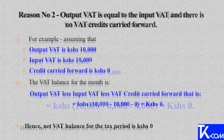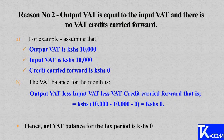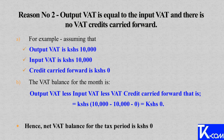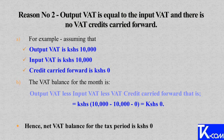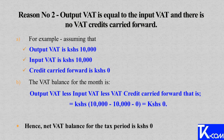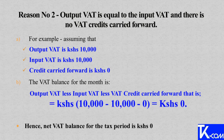Reason number two: output VAT is equal to the input VAT and there is no VAT carried forward. For example, if we assume that the output VAT is 10,000, input VAT is 10,000, and credit carried forward is zero, the VAT balance for the month is output VAT less input VAT less VAT credit carried forward, which gives us 10,000 minus 10,000 minus zero, which is equal to zero. Hence, the net VAT balance for the tax period is zero.